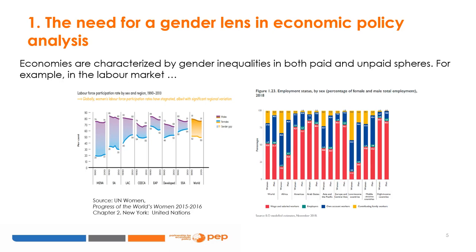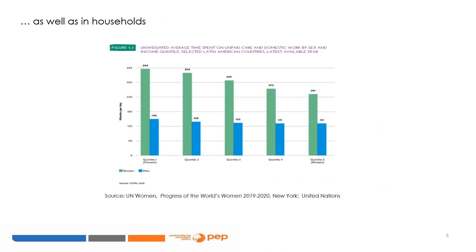This employment status is the most vulnerable form of work since it implies no independent access to income or meaningful say in the way the family business is managed. The gender gap for contributing family work is widest in low-income developing countries, where 43% of women and 17% of men were engaged as contributing family workers. Gender inequality is also found within households, where primary responsibility for unpaid care work is largely assigned to women, and this distribution has both a gender dimension and a poverty dimension.